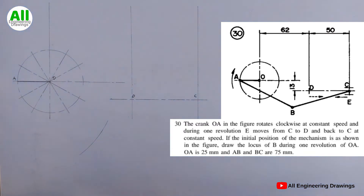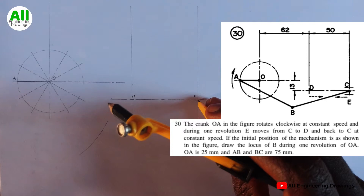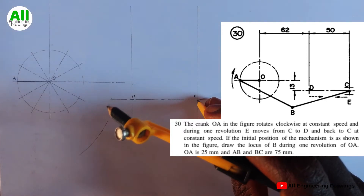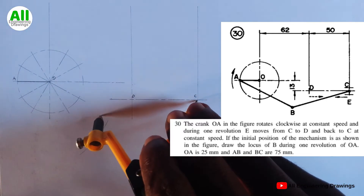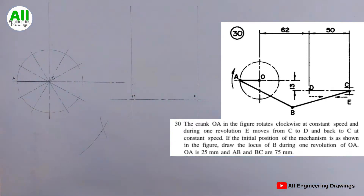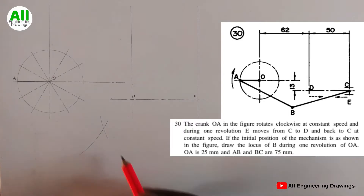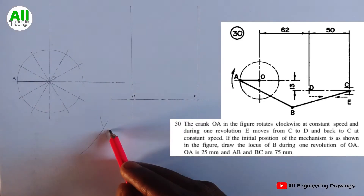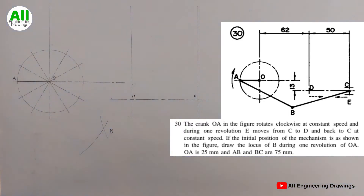After that I will place the compass on point C, then cut an arc to intersect the previous arc. The point where the arcs intersect I will label point B. I will draw lines joining point A to point B and also point B to point C.